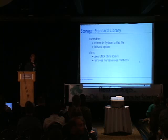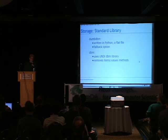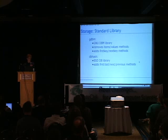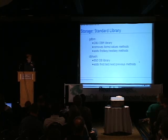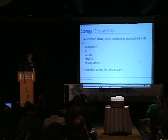The dbm modules are a little non-standard. dumbdbm is written in Python and is actually the most robust because it implements the full mapping interface, using about three files to store data — it's more like a journal. The dbm module uses the Unix dbm module so it's not available on Windows, and it removes the items and values methods. gdbm uses the GNU dbm library and adds firstkey and nextkey methods but removes items and values. dbhash uses the BSD DB library and adds first, last, next, and previous methods.